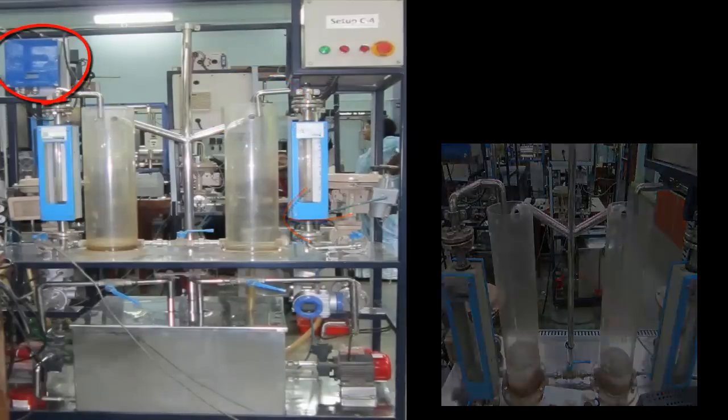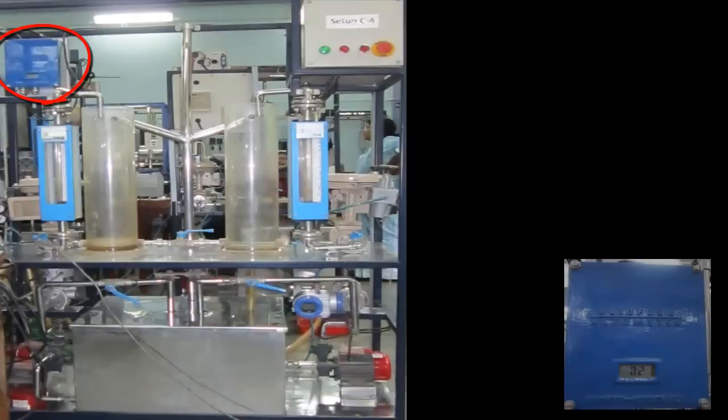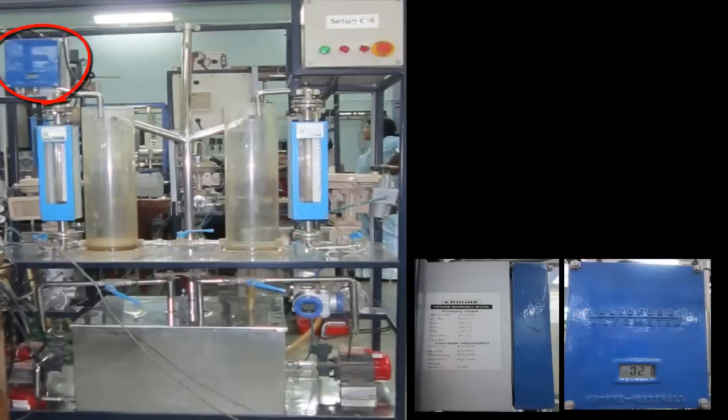On the top left hand corner is the Krone IFS 4000 electromagnetic flow meter. Electromagnetic flow meters are the third most common flow meters behind differential pressure and positive displacement flow meters. A magnetic field is applied to the metering tube which results in a potential difference proportional to the flow velocity perpendicular to the flux lines. The physical principle at work is electromagnetic induction.